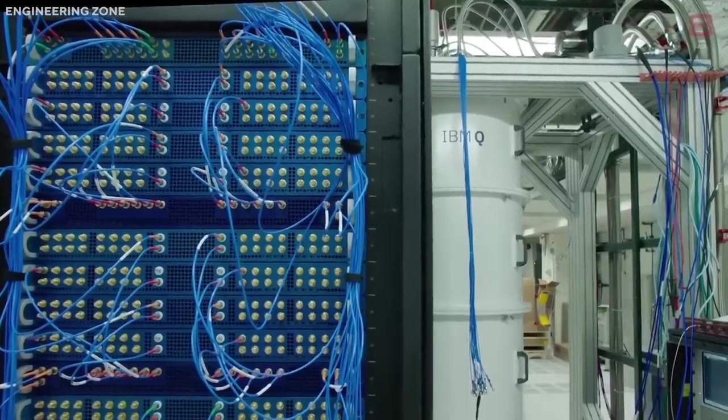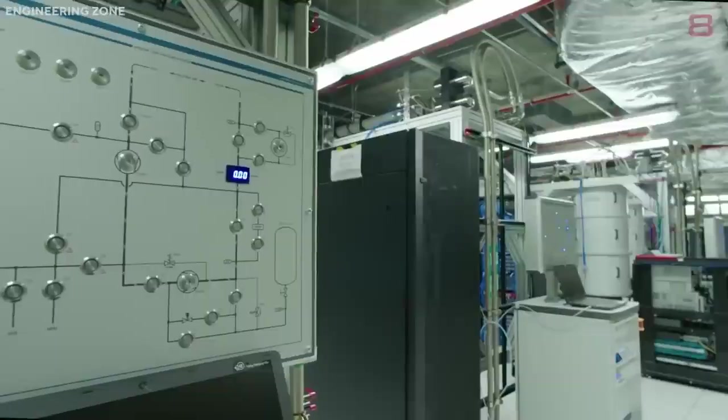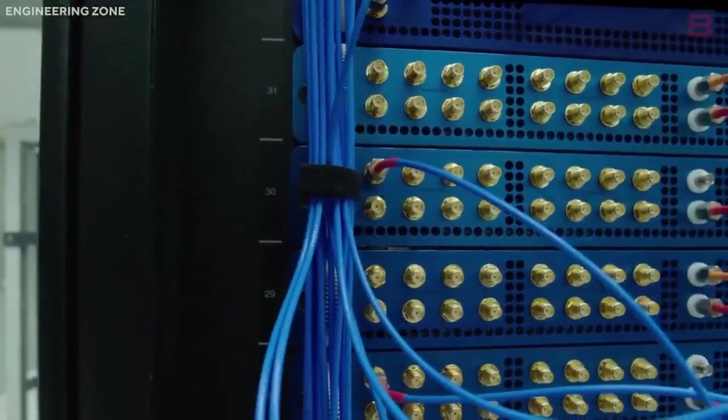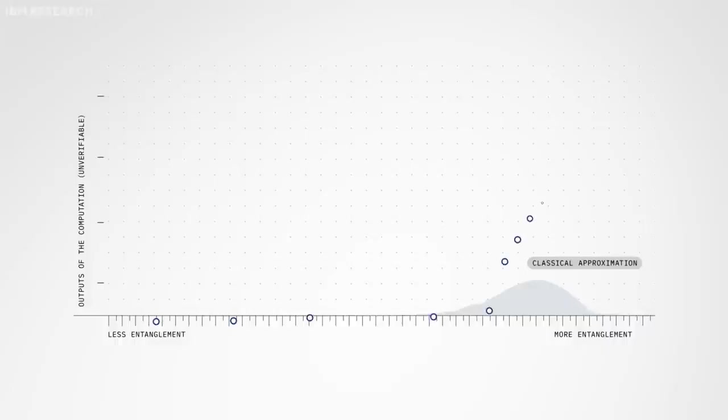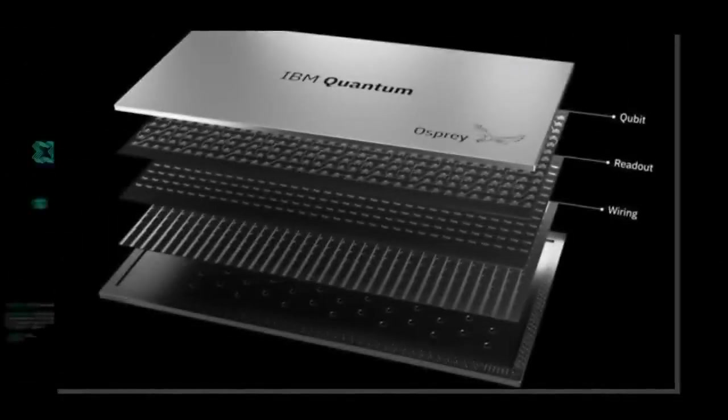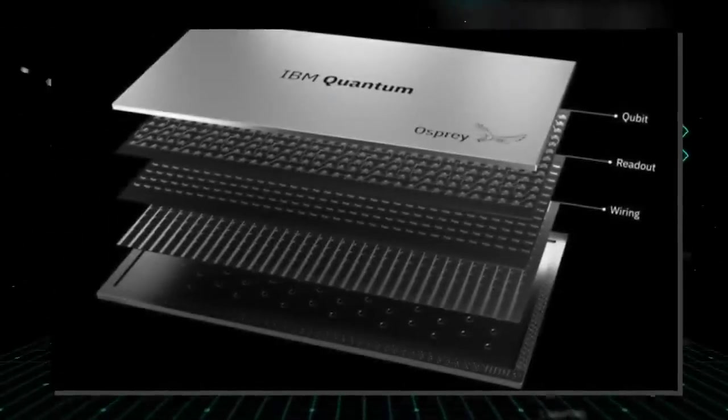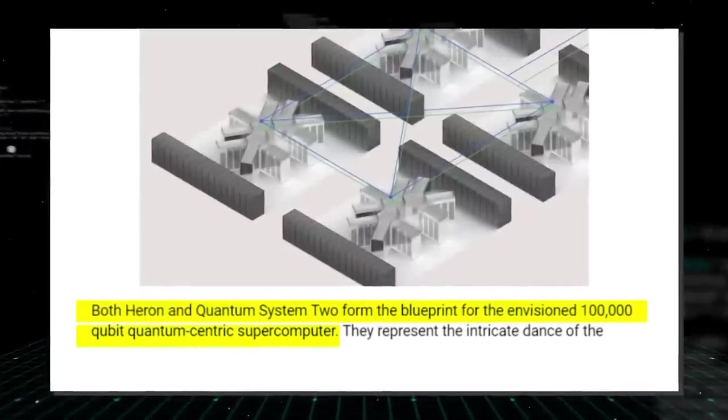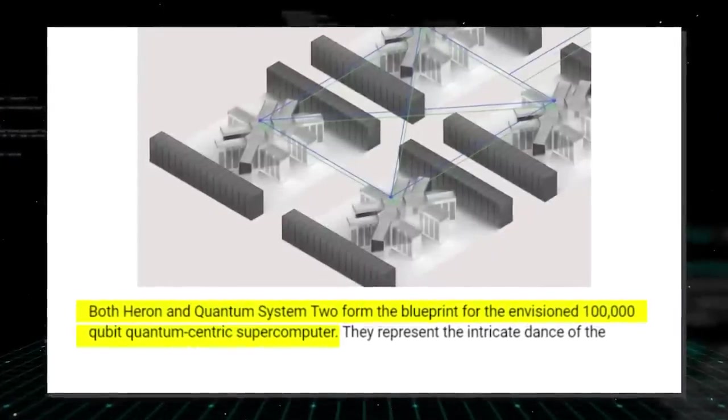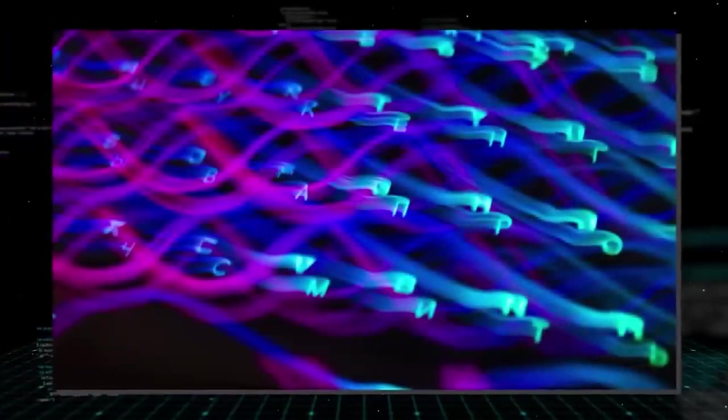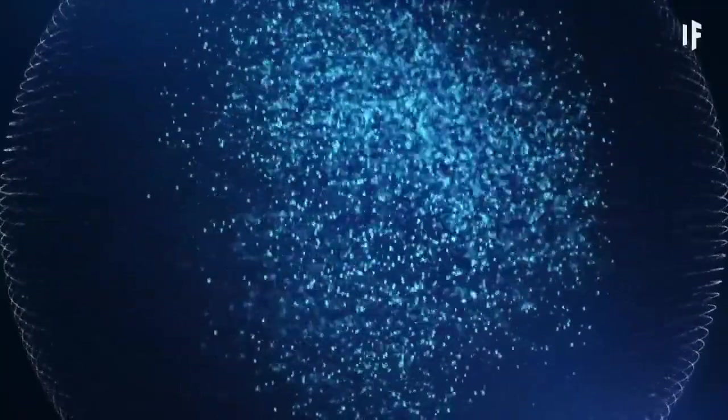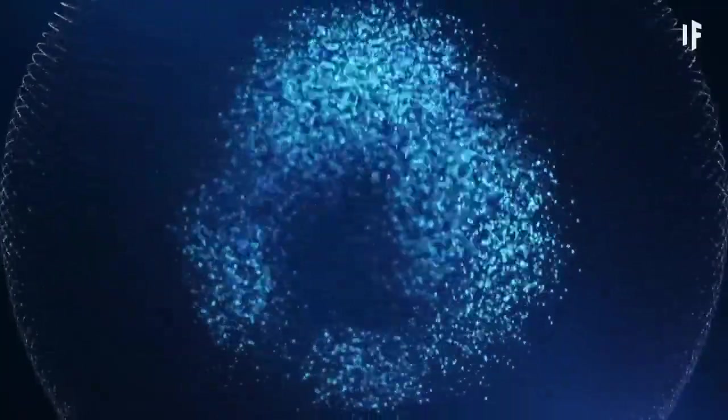The integration of the Quantum System 2 and Heron processors is nothing short of revolutionary, creating an architecture that transcends the classical quantum dichotomy. This integrated system, the quantum-centric supercomputer, will leverage the Heron processors' classical processing prowess to manage the Quantum System 2's quantum capabilities efficiently. Both Heron and Quantum System 2 form the blueprint for the envisioned 100,000-qubit quantum-centric supercomputer. They represent the intricate dance of the classical and quantum worlds, showcasing the power that can be harnessed when these two distinct spheres work in harmony.